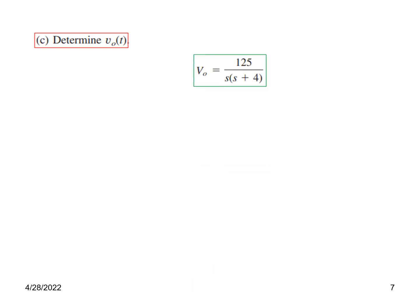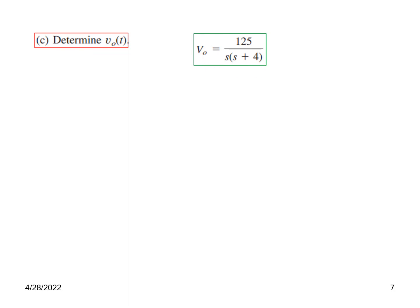Now the third part: we need to find v0(t), the output voltage in the time domain. We already have V0(S) in the S-domain, so we use partial fractions to decompose it and then take the inverse Laplace transform.